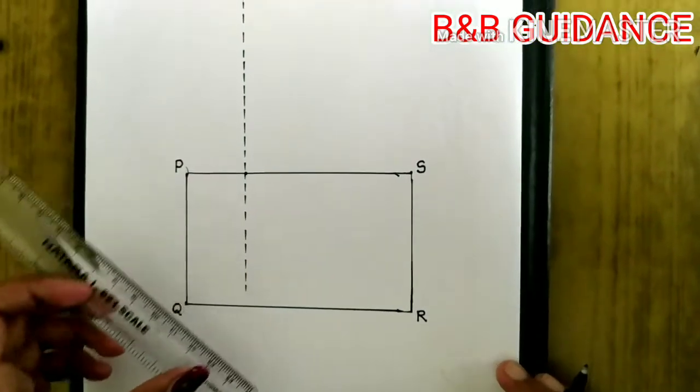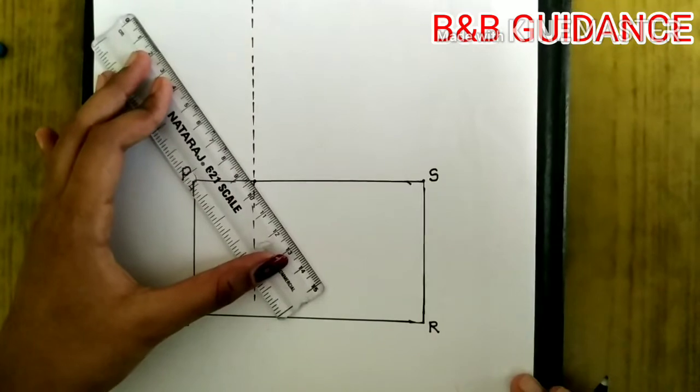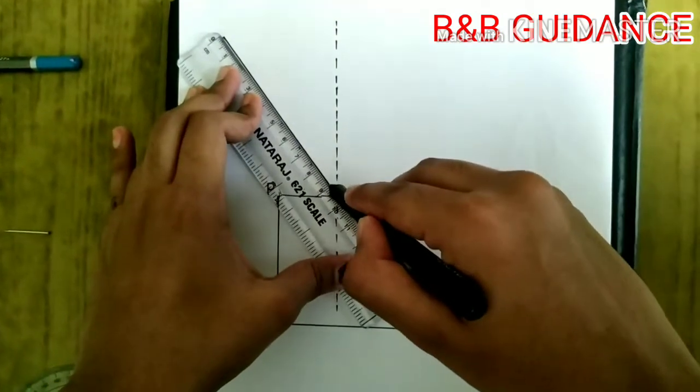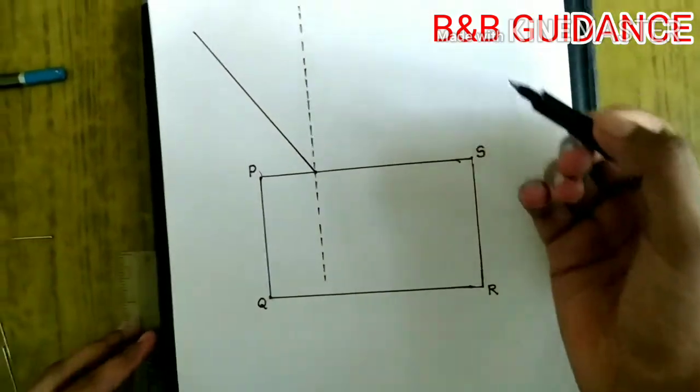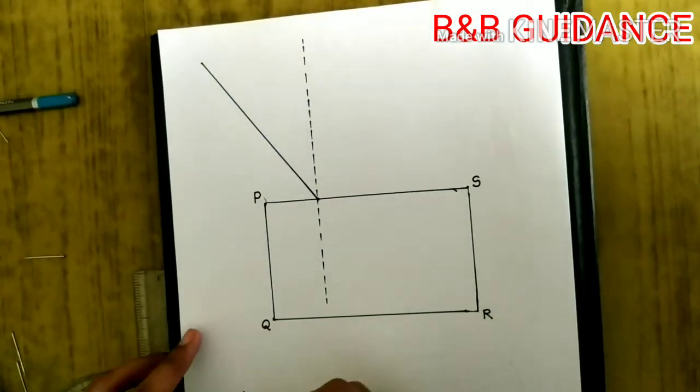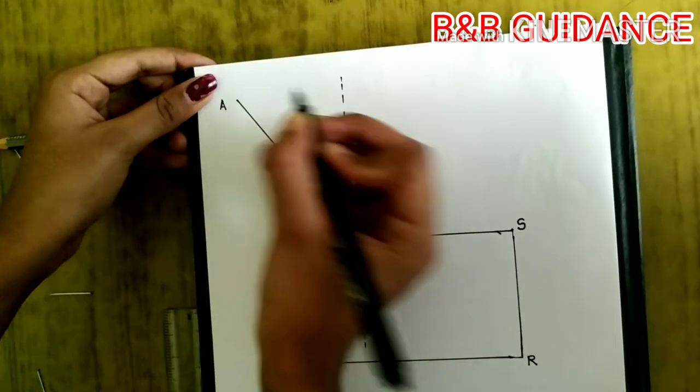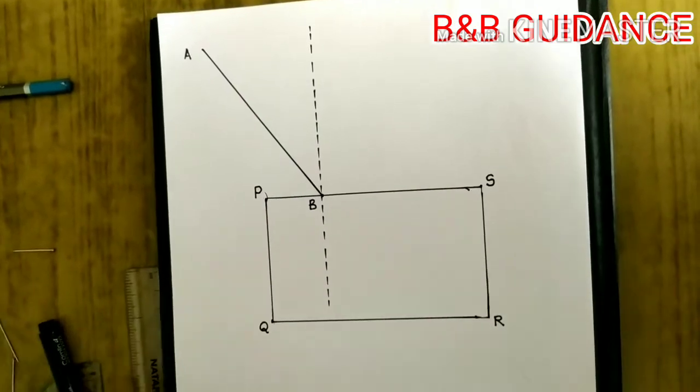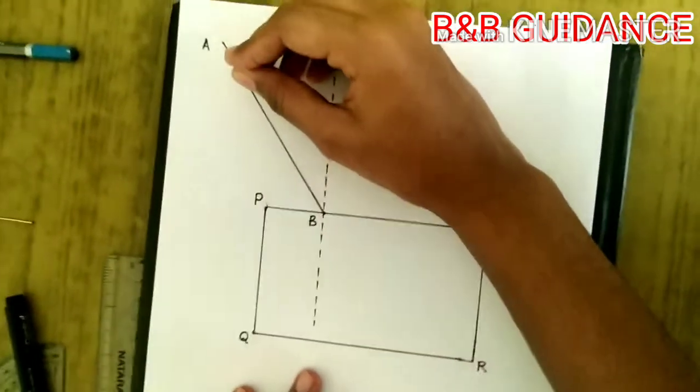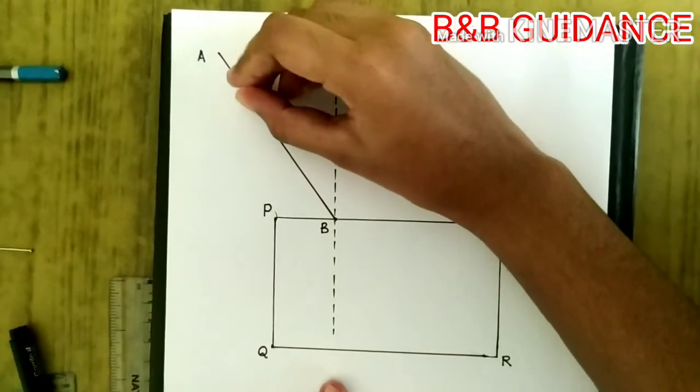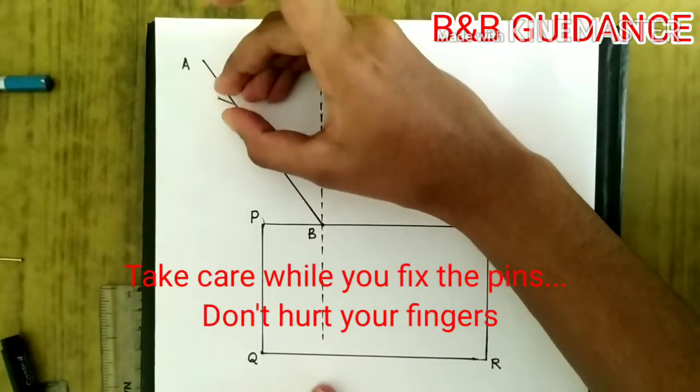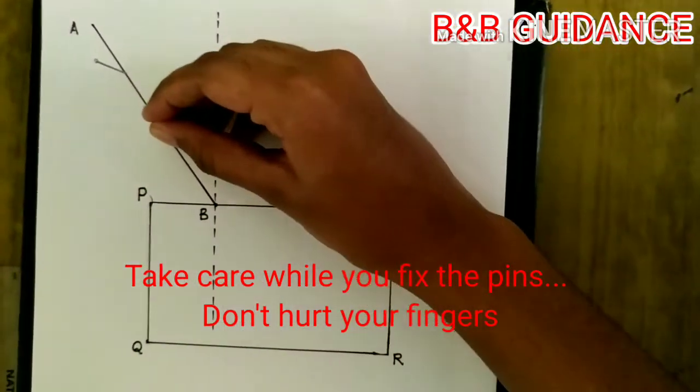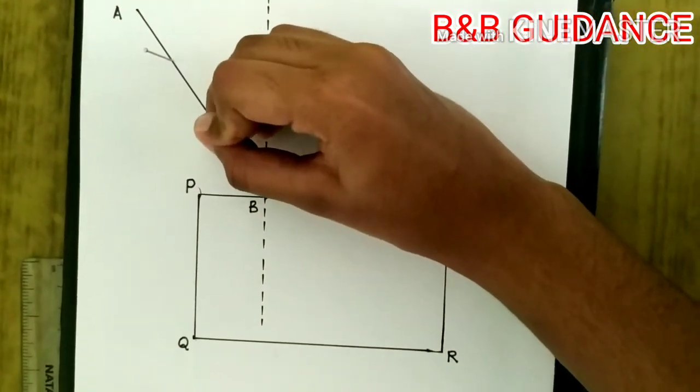Next, we must take a line inclined to PS and name this line as AB. Then taking a pin, we should fix it on the line AB. Using a pointed pin would be better. Then taking another pin, fix it about 3 to 4 cm apart from the first pin.